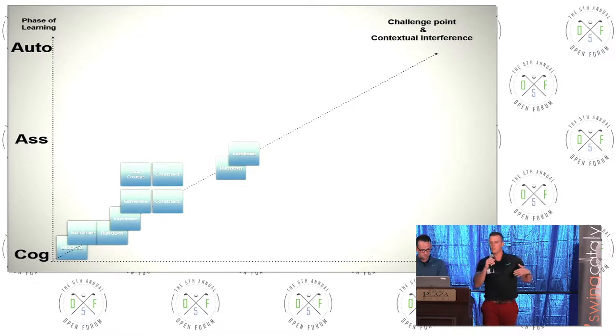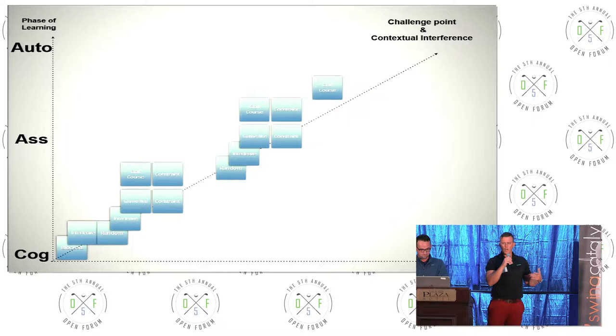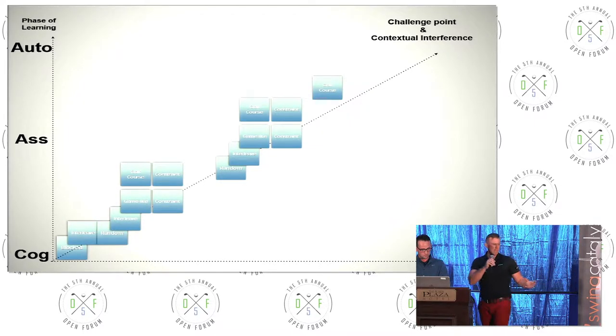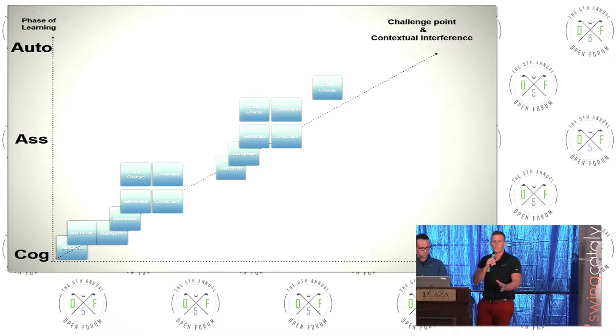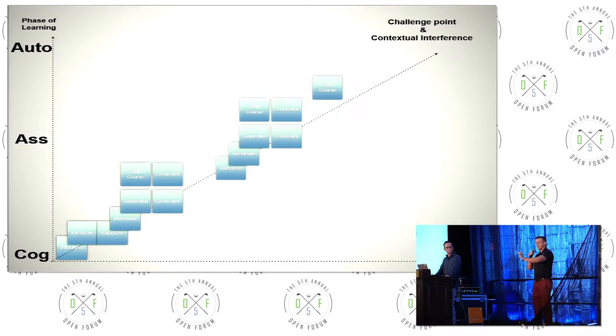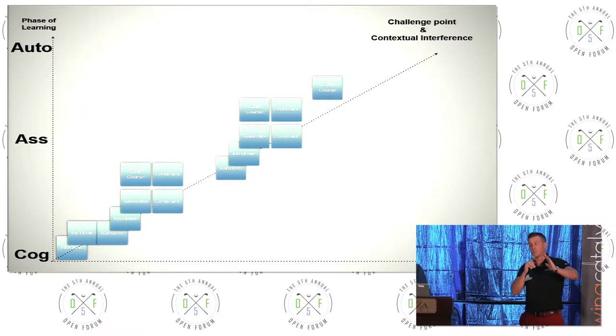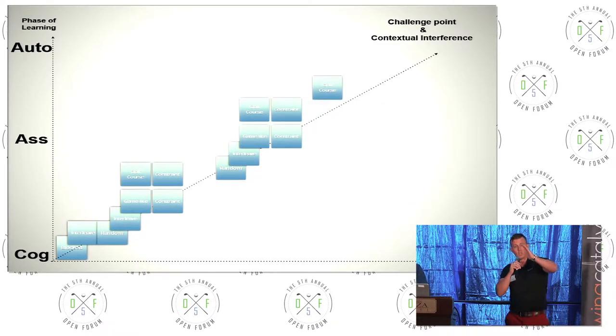Now, as James would become more successful at that, we would call he started to get in an associative state of learning. So what we would do then is maybe there's not as much need for this block practice anymore. Maybe James is now only doing speed variability, and he's starting to hit targets or hit shapes. Because when he's got targets, guess what? The contextual interference and the challenge point have increased.